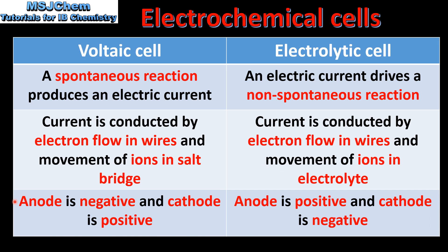Next we look at the anode and the cathode. In a voltaic cell the anode is negative and the cathode is positive. In an electrolytic cell the anode is positive and the cathode is negative.